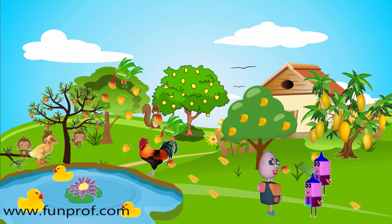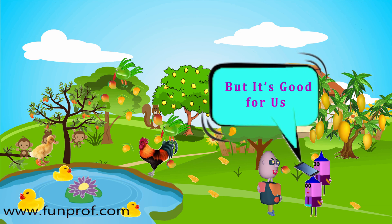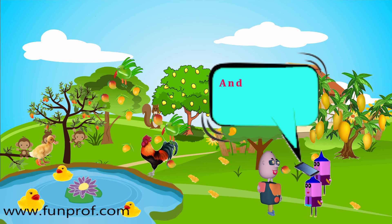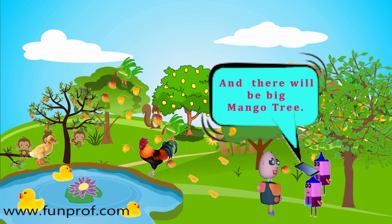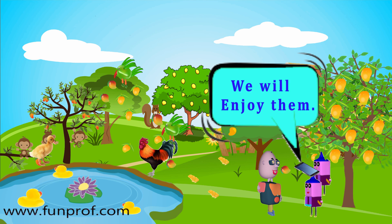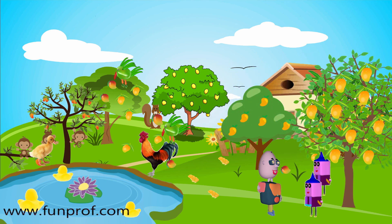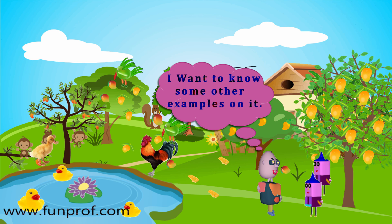They search on Google. Google says that they throw the seeds, but it's good for us and also for them — then there will be a big mango tree, and from it many mangoes will come and we will enjoy them. Adam's friend explains this to Adam. Adam says, okay, but I want to know — this was dispersal by animals. I want to know if there are some more examples of it.